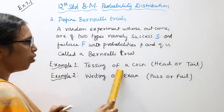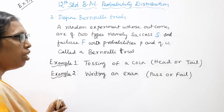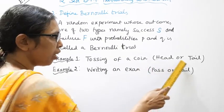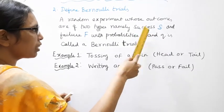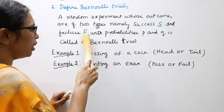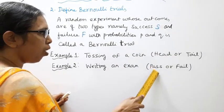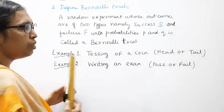Example: Tossing of a coin — one success, one failure. Writing an example with 1-P.